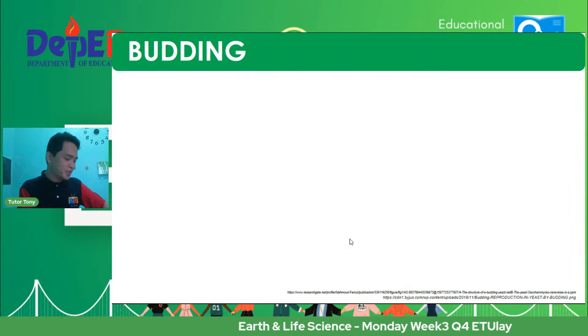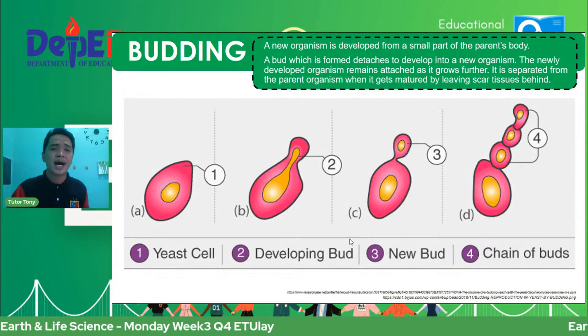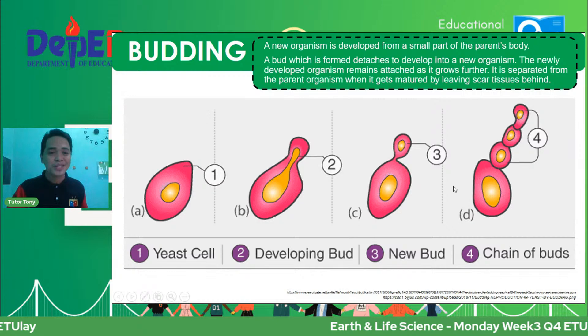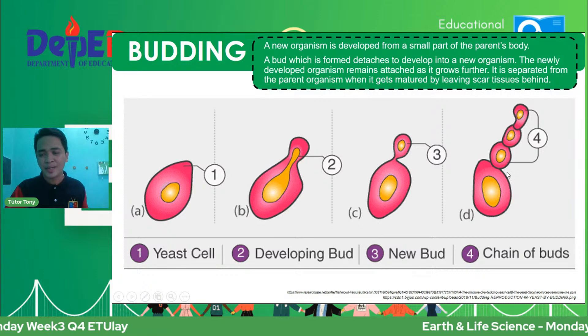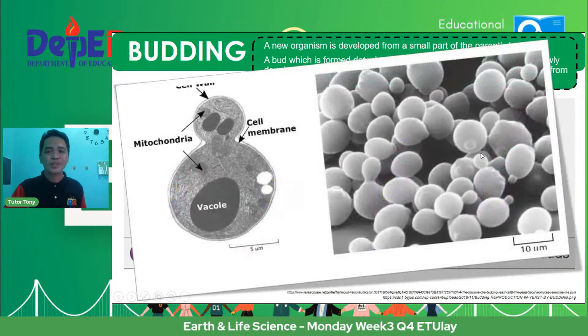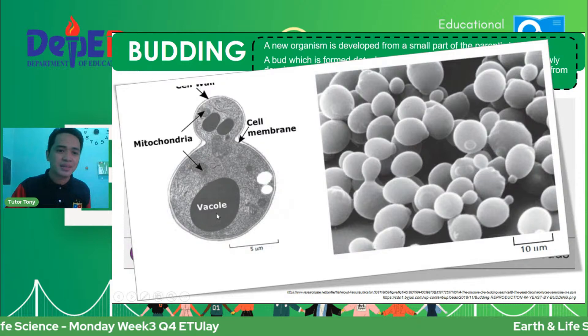Let's proceed with budding. Budding — from the word bud — involves an outgrowth from the parent. Sa yeast, may yeast cell, then step by step, mag-develop siya ng bud. The new bud can even form chains of buds. Looking under the microscope, ganito ang tsura ng yeast — as you can see, meron siyang genetic materials at mga parts ng cell.